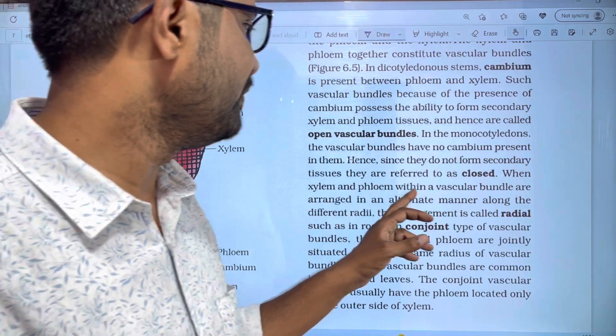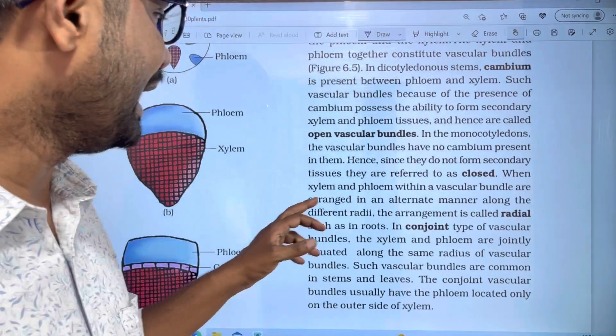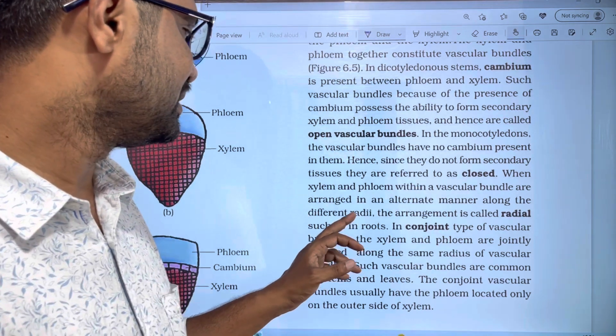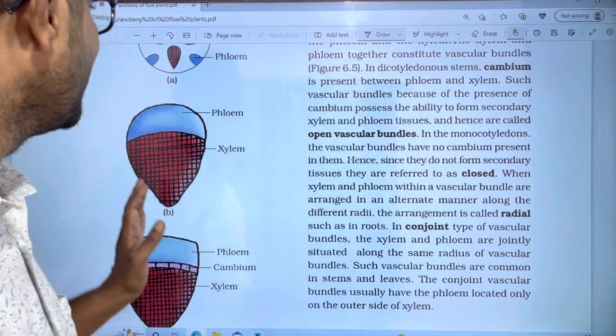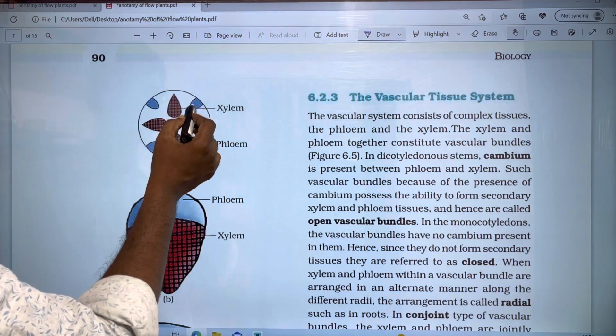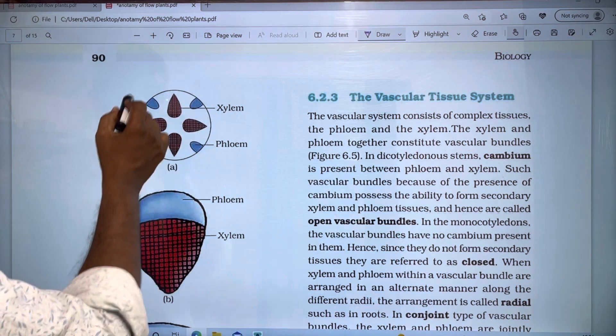When xylem and phloem within the vascular bundles are arranged in an alternate manner along different radii, the arrangement is called radial, such as in roots.